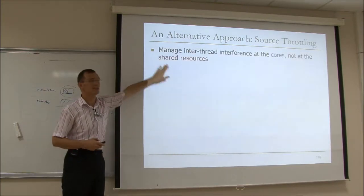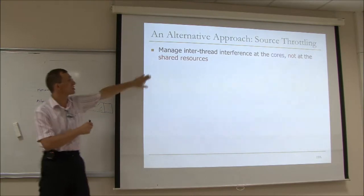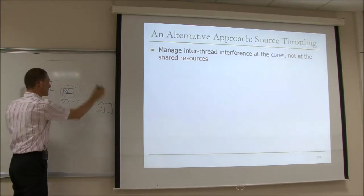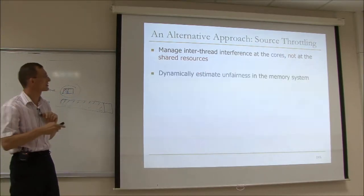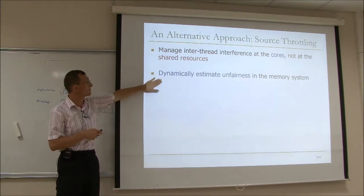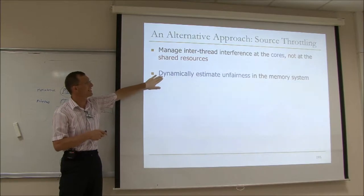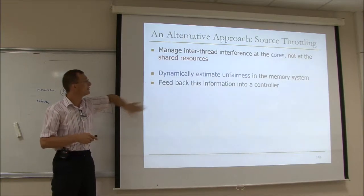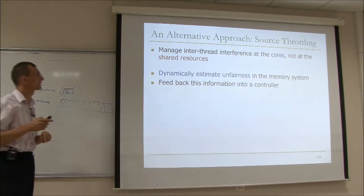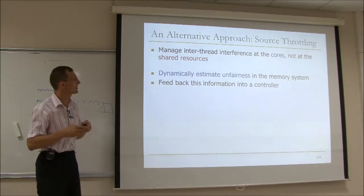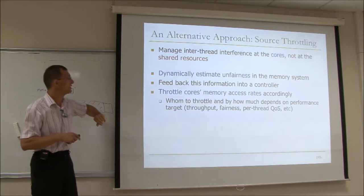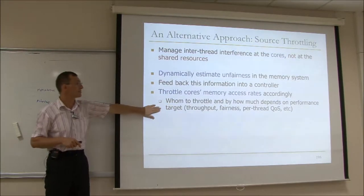Instead of managing inter-thread interference at the shared resources, we want to manage it at the periphery of the shared resources. The approach we're going to take consists of several steps. First, the system will dynamically estimate unfairness in the memory, feed this information into a controller — which could be implemented in hardware or software but needs quick adaptation mechanisms — and throttle the core's memory access rates accordingly based on this information.